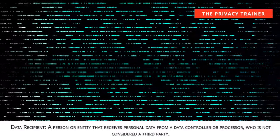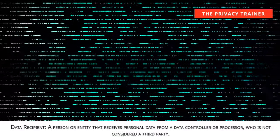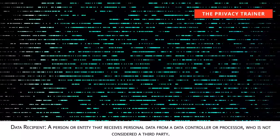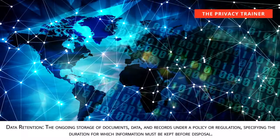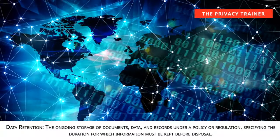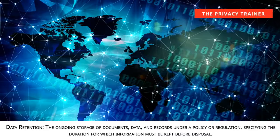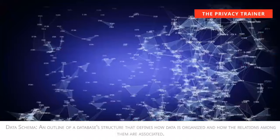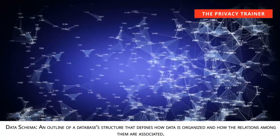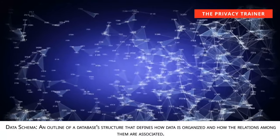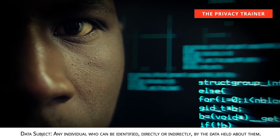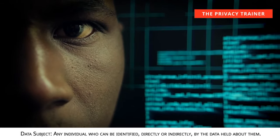Data recipient. A person or entity that receives personal data from a data controller or processor, who is not considered a third party. Data retention. The ongoing storage of documents, data, and records under a policy or regulation, specifying the duration for which information must be kept before disposal. Data schema. An outline of a database's structure that defines how data is organized and how the relations among them are associated. Data subject. Any individual who can be identified, directly or indirectly, by the data held about them.